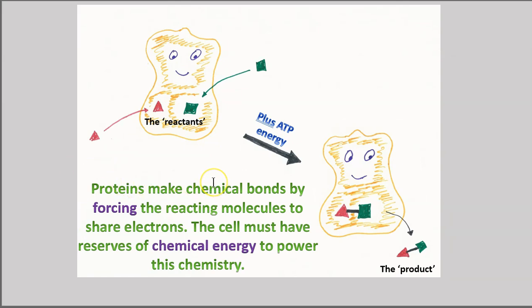Now proteins make chemical bonds by forcing the reacting molecules to share electrons, but the cell must have reserves of chemical energy to power this chemistry. Here we have the reactants; they have stuck to the protein, and the protein's job is to make a chemical bond between these two molecules. That's going to require forcing these molecules together so that two atoms can form a chemical bond, and that's going to require ATP energy. The product will detach and float around the cell.